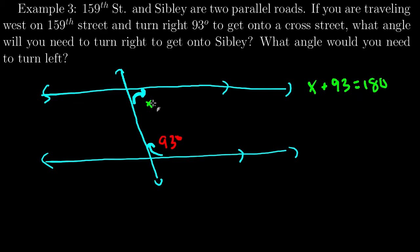So, I know that I will follow the rule x plus 93 equals 180. That would be same side interior. If I want to give the actual name of it, I'll subtract 93 degrees from both sides. Get that x is equal to 87 degrees. And there's my answer for turning right.